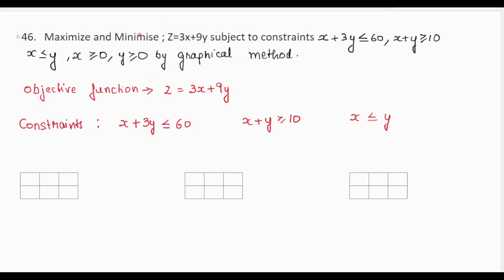We have been given an objective function z = 3x + 9y, and there are certain constraints: x + 3y ≤ 60, and others. We need to find the maximum and minimum value of this objective function z.